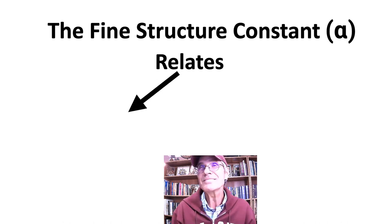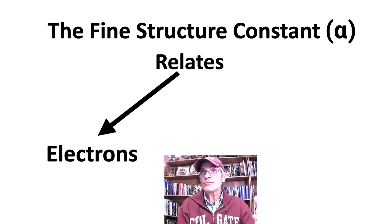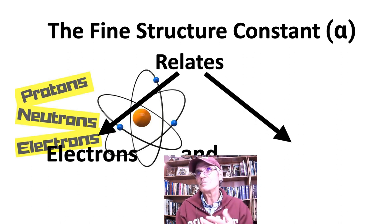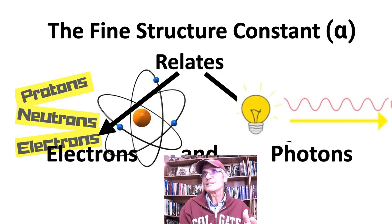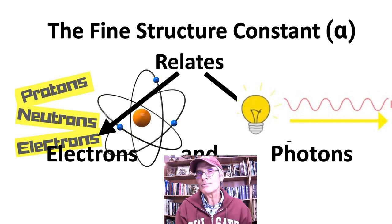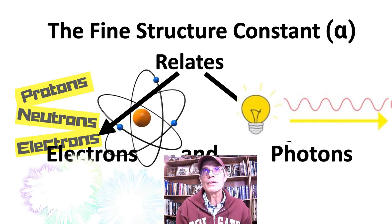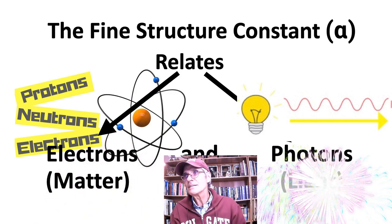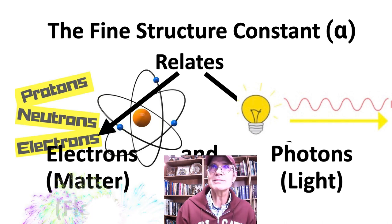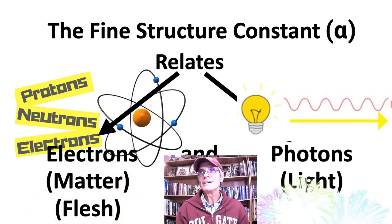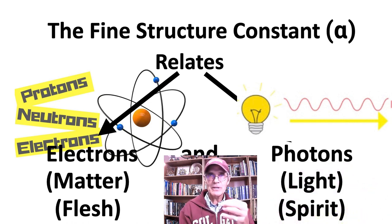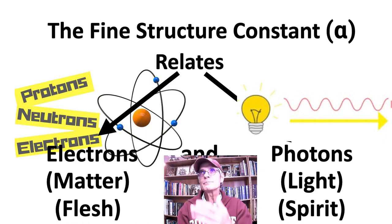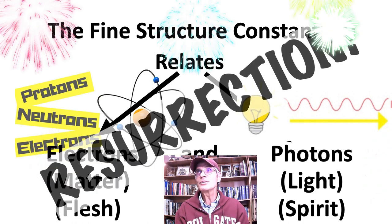The fine structure constant relates two things: electrons — that's matter, protons, neutrons, electrons — and also a photon, which is light. Is it a wave? Is it a particle? Photons are what light travels on. So symbolically, what I'm seeing is this is flesh — that's matter — and light is spirit. Alan Green says this fine structure constant has something to do with manifesting the flesh into the spirit. So again, this has to do with the idea of resurrection.